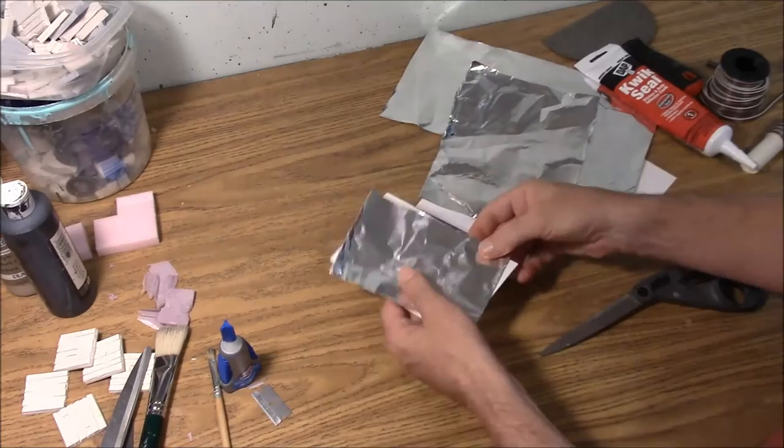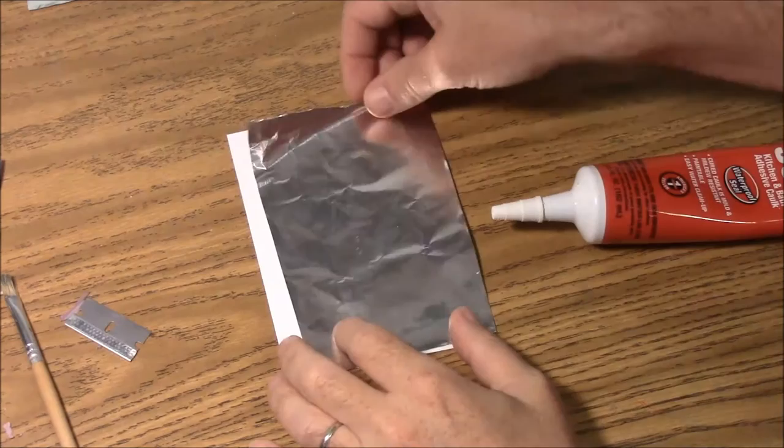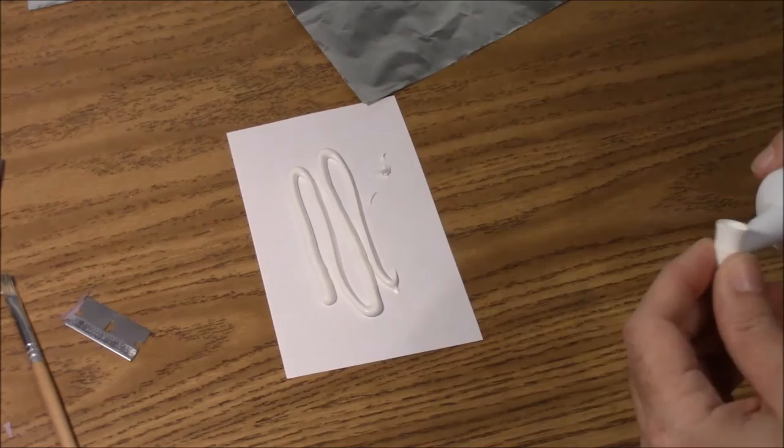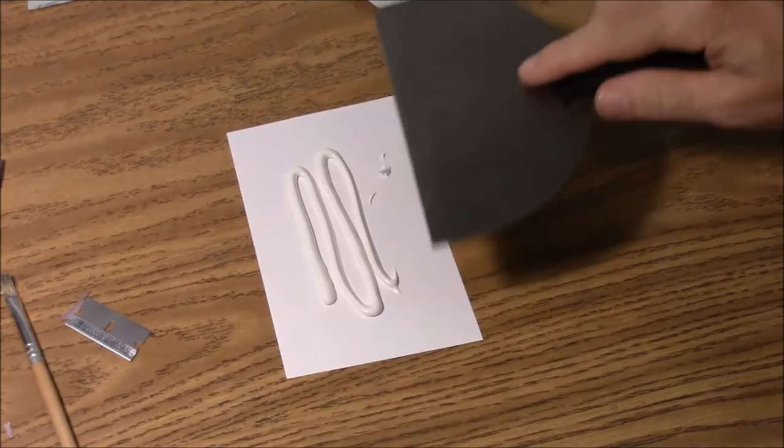Now what you want to do is you want to squeeze a little bit of this caulking onto the cardstock. I'm going to put on about that much. That's probably about fine to use here. What I'm going to do is I'm going to take this putty knife and I'm going to scrape it to a thin layer.